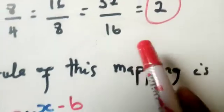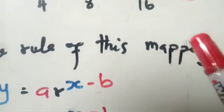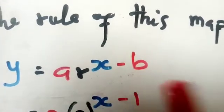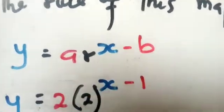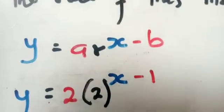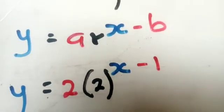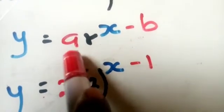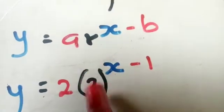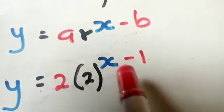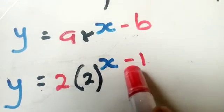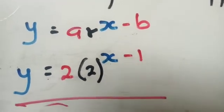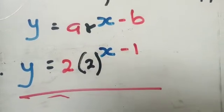Now we substitute into the formula y = a·r^(X−B). A is 2, R is 2 (the common ratio we calculated), and B is 1. So the exponential mapping rule is: y = 2 × 2^(X−1). In exponential mapping there are only three things to find: a, r, and B. X and Y are always there and don't change.